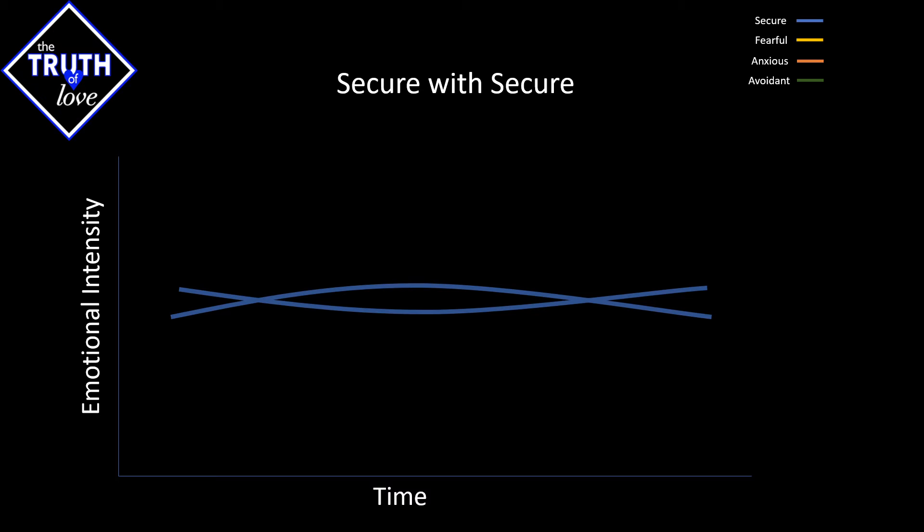In the case of a secure attachment, what you'll notice is that these lines have tended to switch with one another, but they don't tend to be very sporadic. They tend to be very spread out, and this is a normal thing. Individuals will have hard days, they will have good days, but they don't tend to stay there if they're secure.